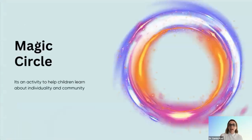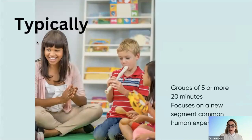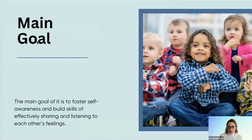A lot of people call it the 'magic circle' because it helps children learn about not only their individuality but how they connect within the community. Typically, it's for groups of five children or more. You're usually spending about 20 minutes focusing on something new or a common human experience. The main goal is to foster self-awareness and develop the skills of sharing information respectfully and authentically, and to actively listen to each other's feelings.